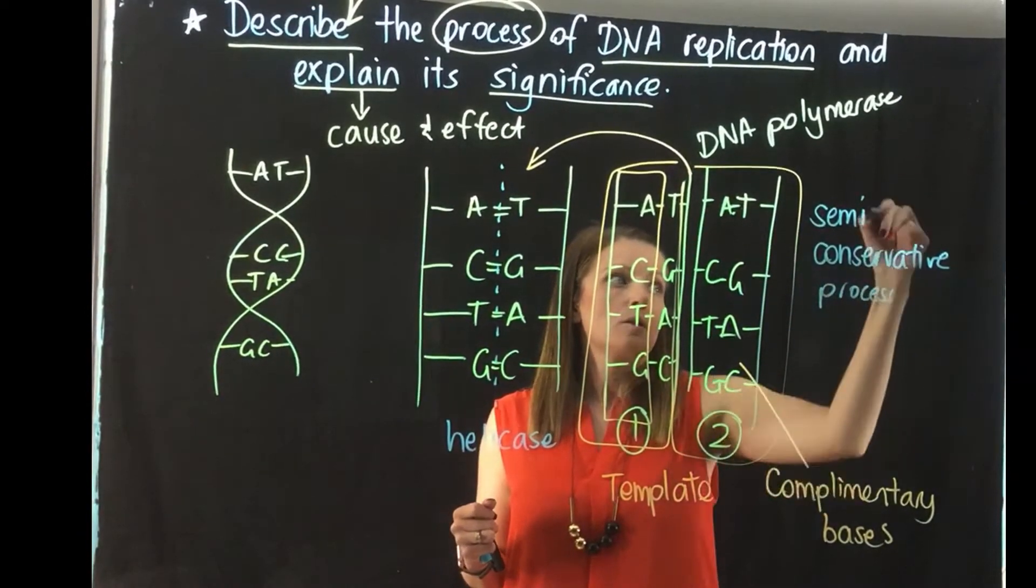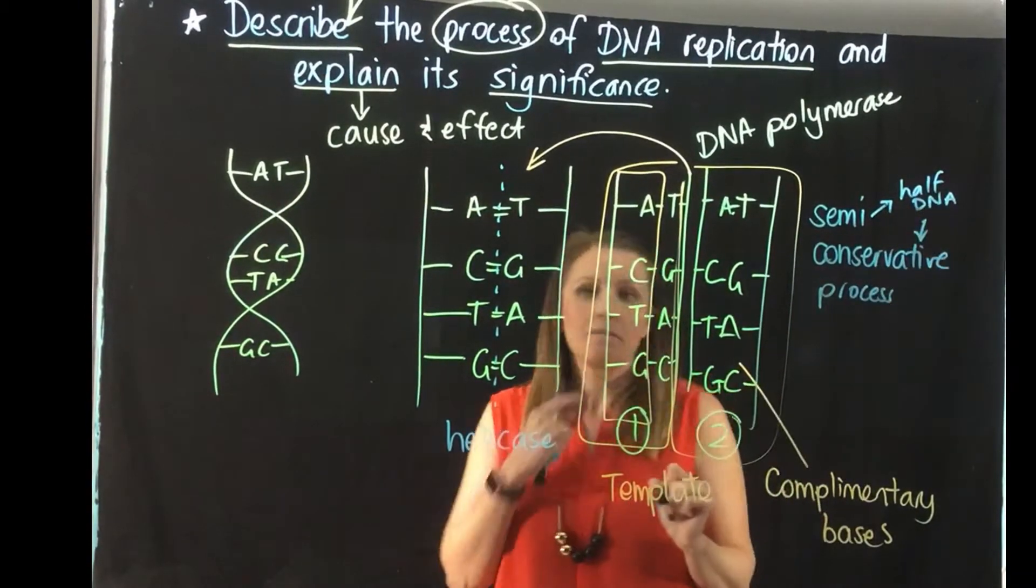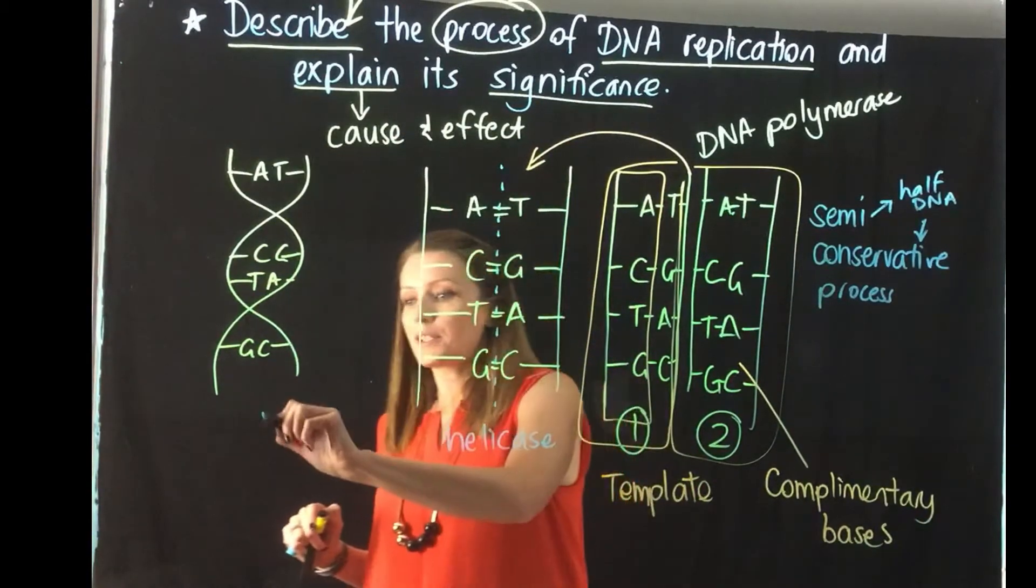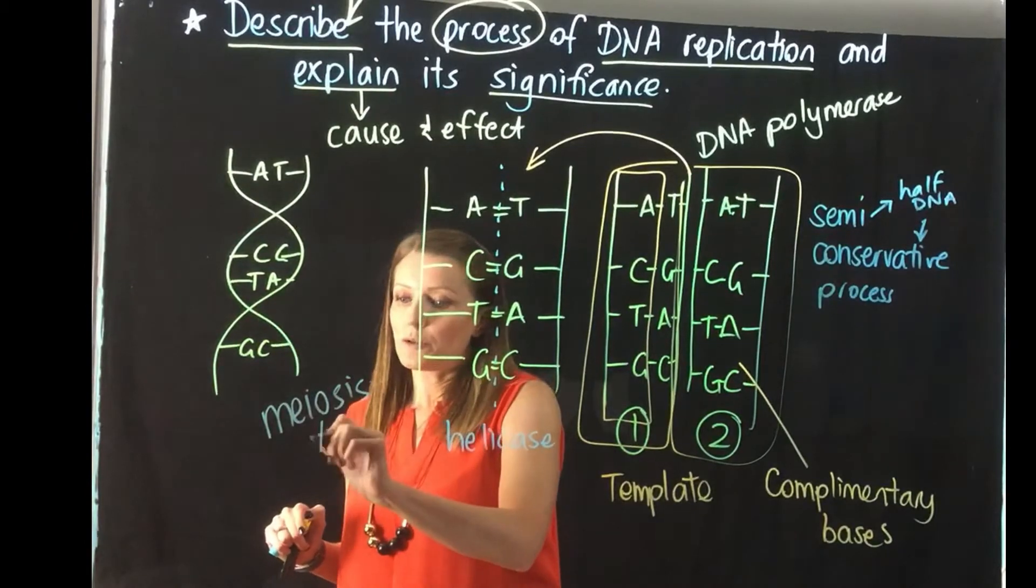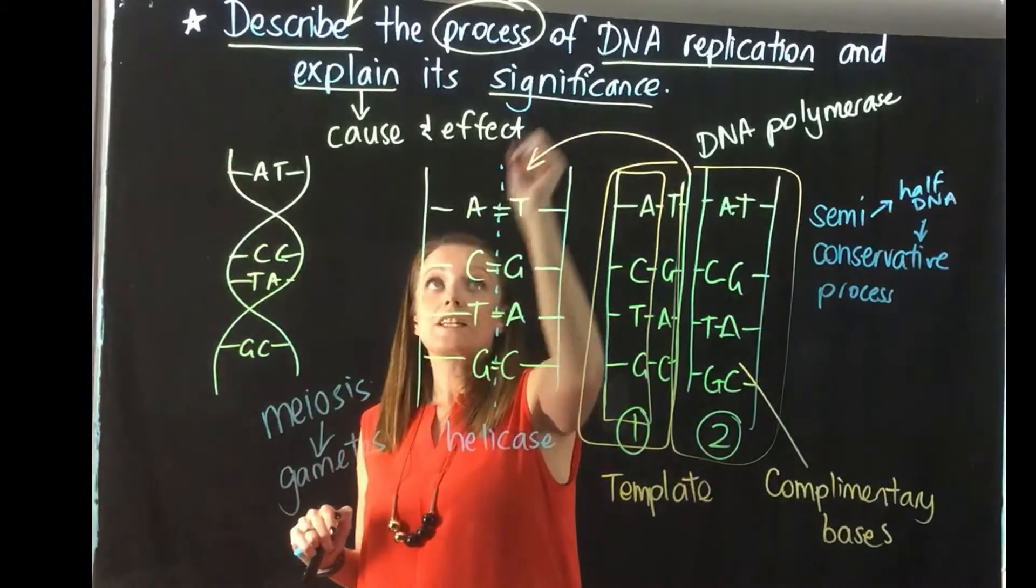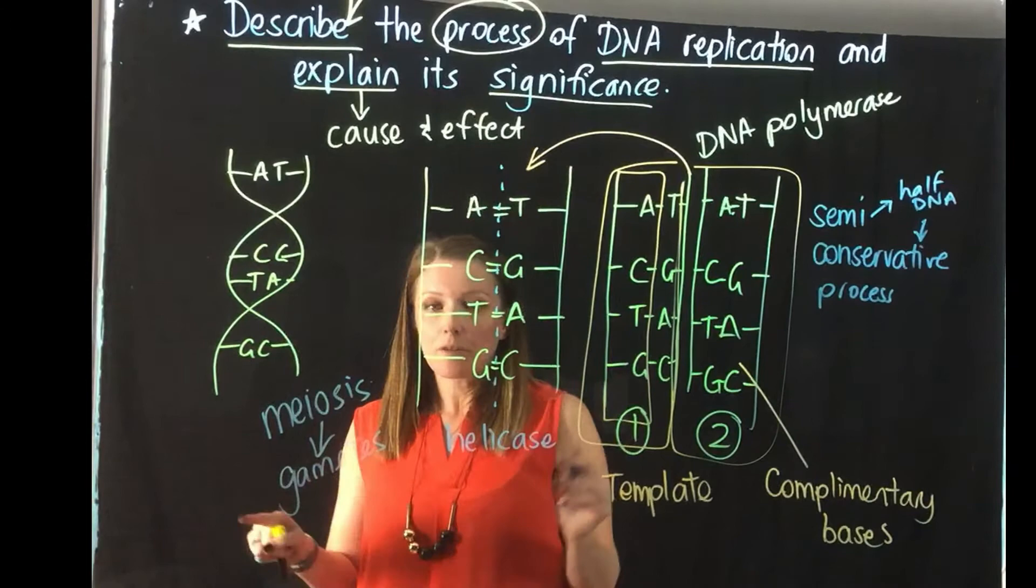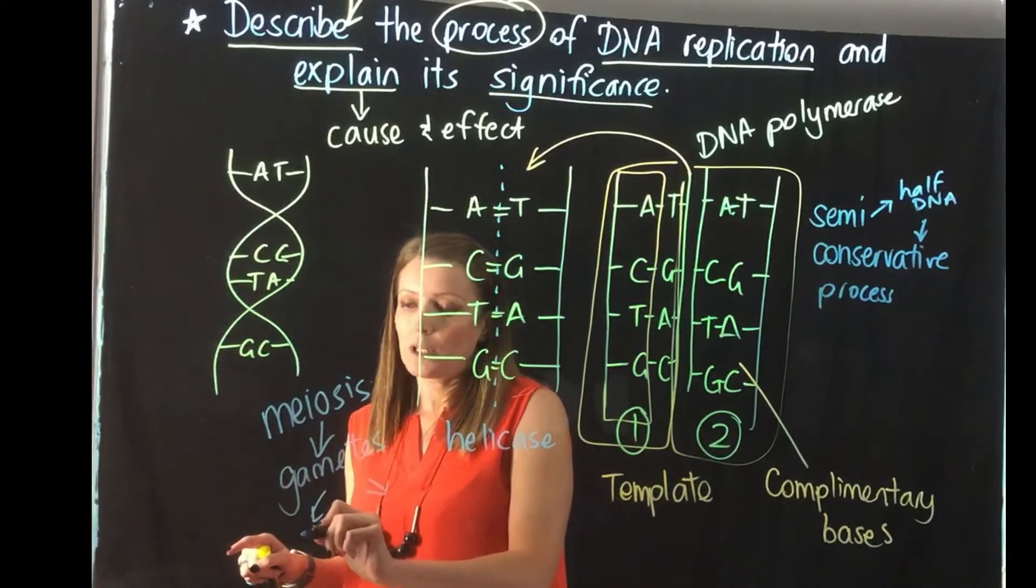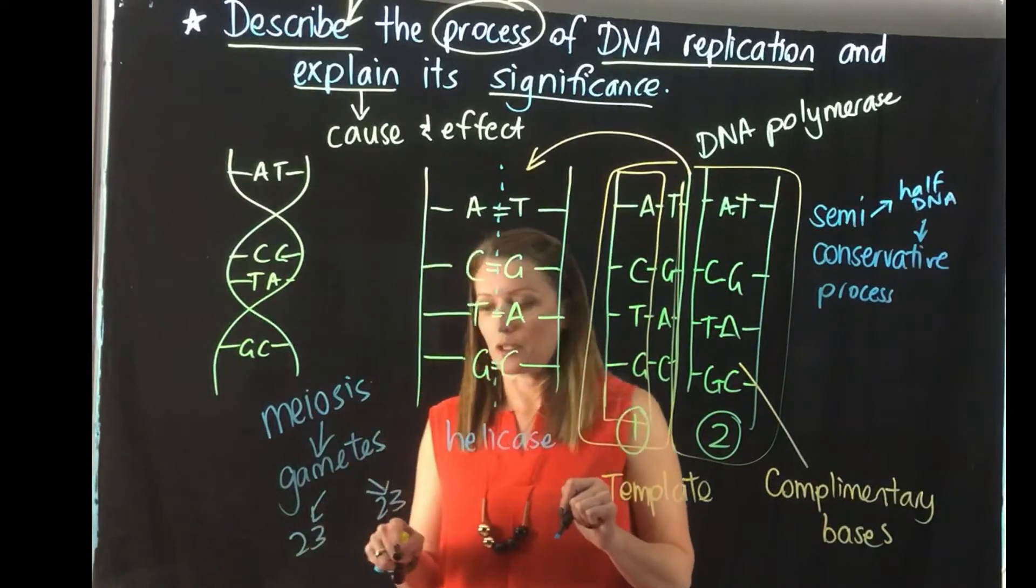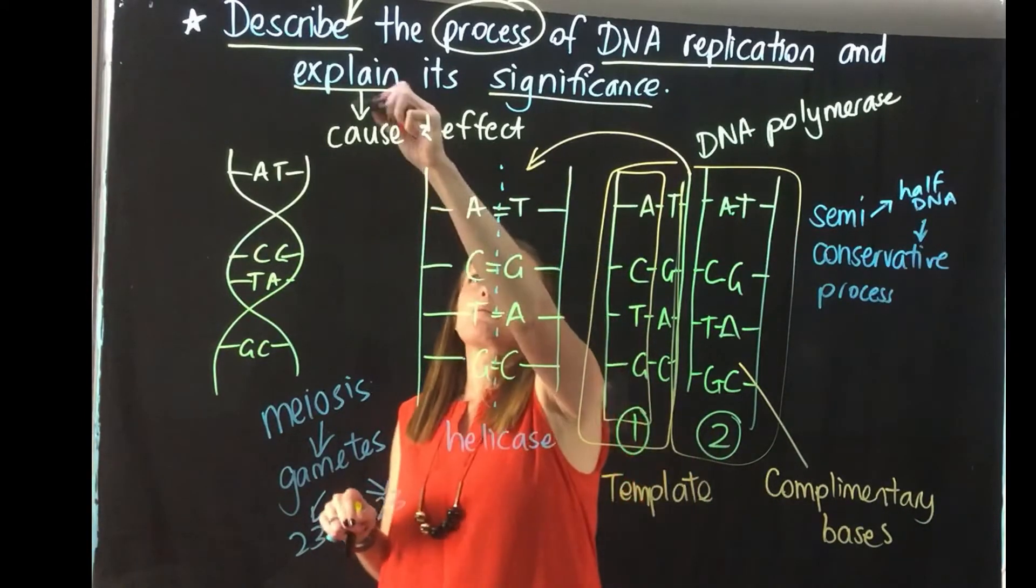So when we look at the significance, in particular we looked at the process of meiosis which we use to create our gametes, so our sex cells. So the DNA has to replicate first in order for meiosis to happen properly. So the DNA replicates and then it splits in half so that we end up with 23 chromosomes in our gametes. So when they come back together during sexual reproduction, we come back to our 46 chromosomes.